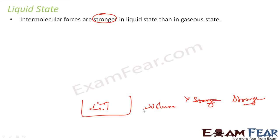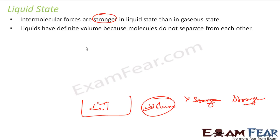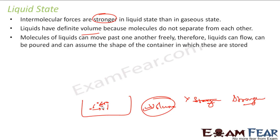It is strong, but not that strong. It is stronger than gas, so they have a definite volume at least — the molecules don't separate from each other and they have a finite volume. But these liquids can move away, move past each other, they can move freely. And that's why they don't have a definite shape.